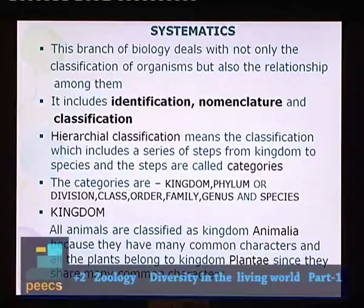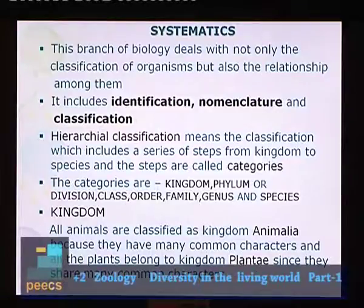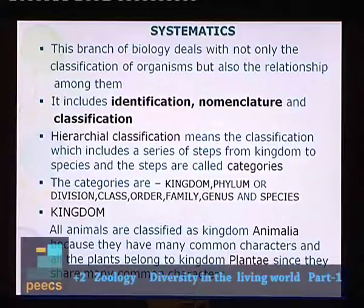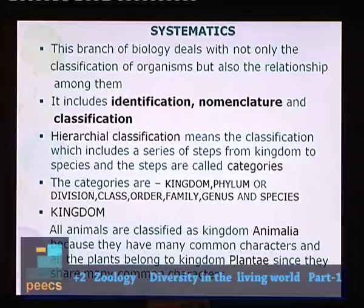Hierarchical classification includes a series of steps from kingdom to species, and these steps are called categories: kingdom, phylum (or division in the case of plants), class, order, family, genus, and species. This is the hierarchical classification.